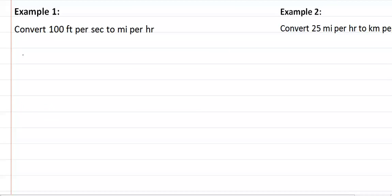For example one, we have 100 feet per second, which means we have feet over seconds. So we have 100 feet over seconds. We want to convert feet to miles, so we have a nice conversion for that. We have that 5,280 feet equals one mile.